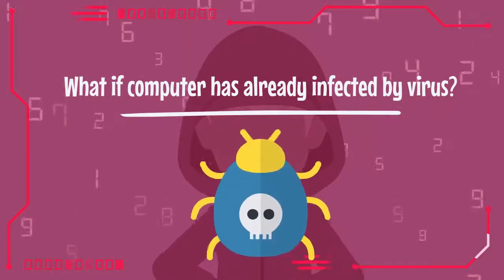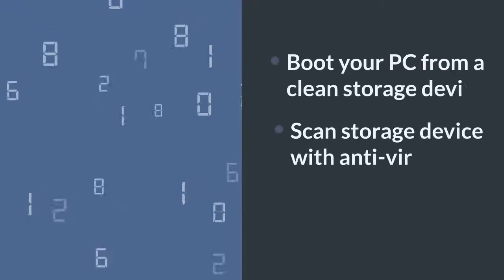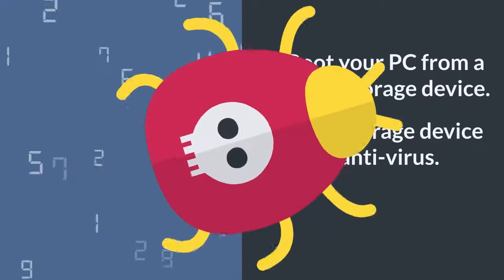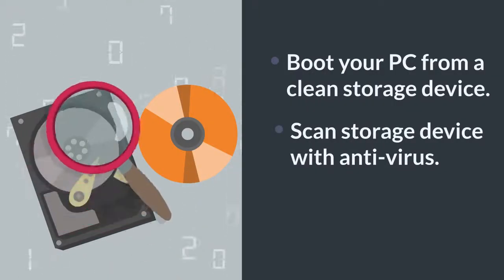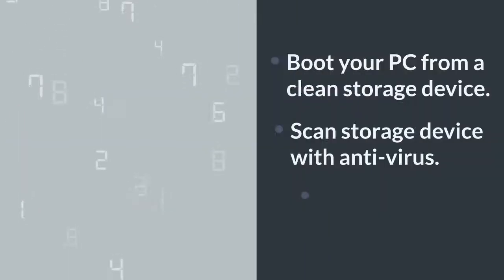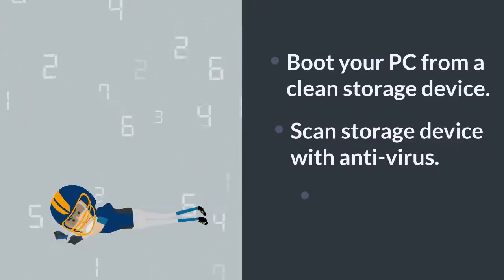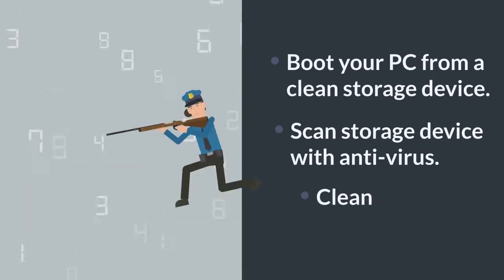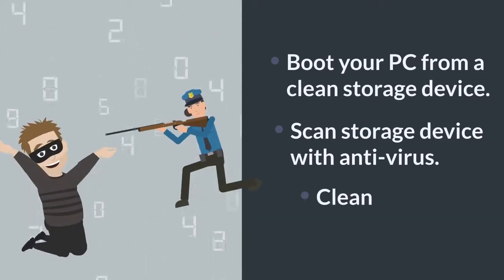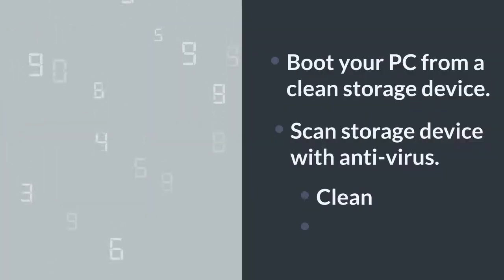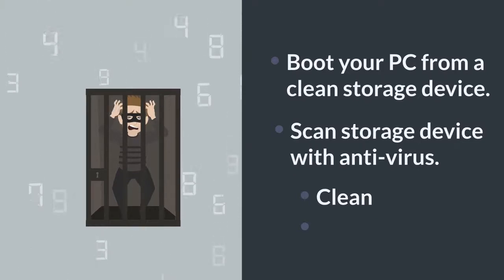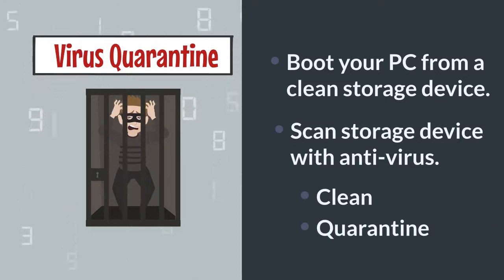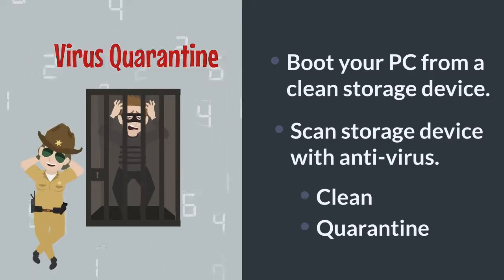What if a computer has already been infected by a virus? If you feel your computer is infected, first of all reboot it from a virus-free operating system. Second, use an antivirus to scan the infected storage devices. When a virus is caught by an antivirus, it gives three common options: clean, quarantine, and delete. If the clean option is selected, antivirus tries to remove the virus from the data file and kill it. If quarantine is selected, the infected file is kept under control of the antivirus and becomes harmless for other files, though it is not virus-free. If delete is selected, the infected file is erased from the storage device.